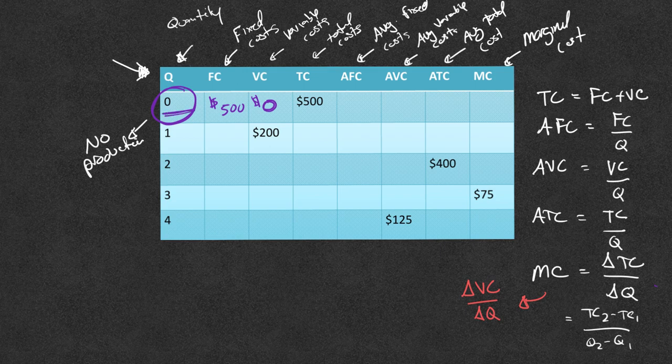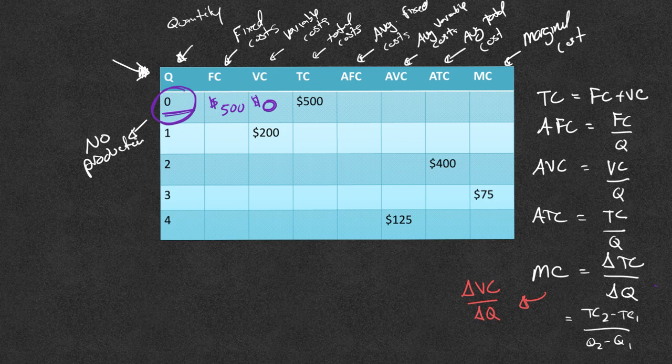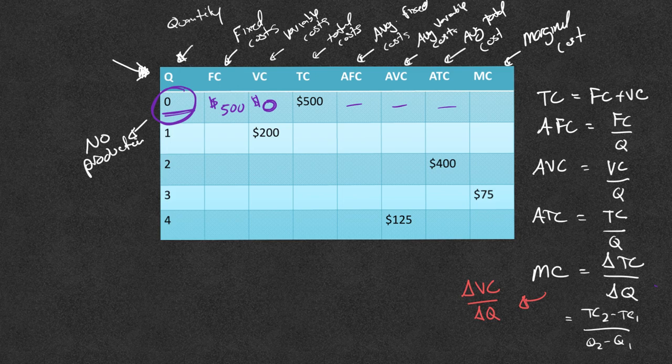Now with that sticking with quantity equal to 0, don't forget that average fixed cost, average variable cost, average total cost. Ever see that average? You're dividing by the amount of quantity that's being produced and you can't divide by 0. So most places will just put dashes. That's how I would teach it. I just taught it with dashes. They might want you to put undefined. It depends on your professor's preferences.